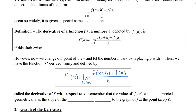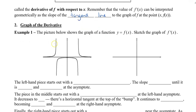This is called the derivative of f with respect to x. The value of f prime of x can be interpreted geometrically as the slope of the tangent line to the graph of f at the point (x, f of x). So let's take a look at the graph of the derivative. We have a graph of y equals f of x on the left, and I want you to use it to sketch the graph of f prime of x. The easiest approach is to think about the tangent line — specifically its slope — because f prime equals slope.